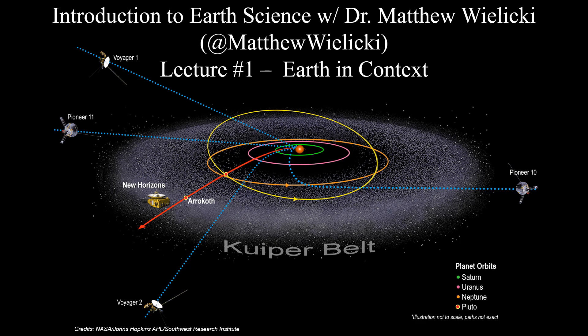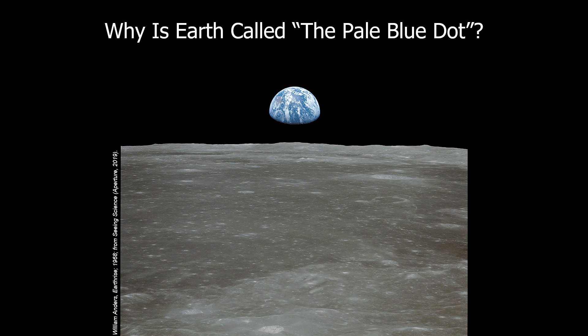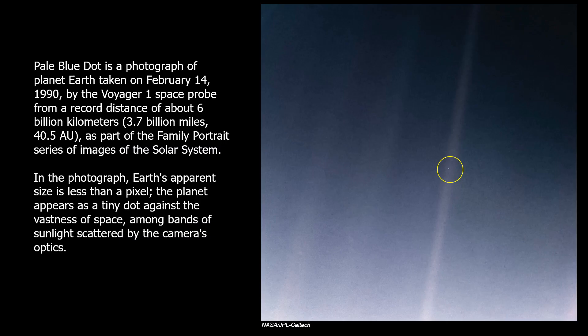We'll talk a little bit about New Horizons when we talk about Pluto as well. We call our planet the pale blue dot, and that really comes from the image of Earth Rise taken in 1968 from one of the Apollo missions, where we really started to identify our planet in the vastness of space. Before we had these images of earth, it's difficult to really realize that our planet is this little pale blue dot in the vastness of space. It's images like this that really invigorated the modern-day environmental movement and the push to protect our planet.